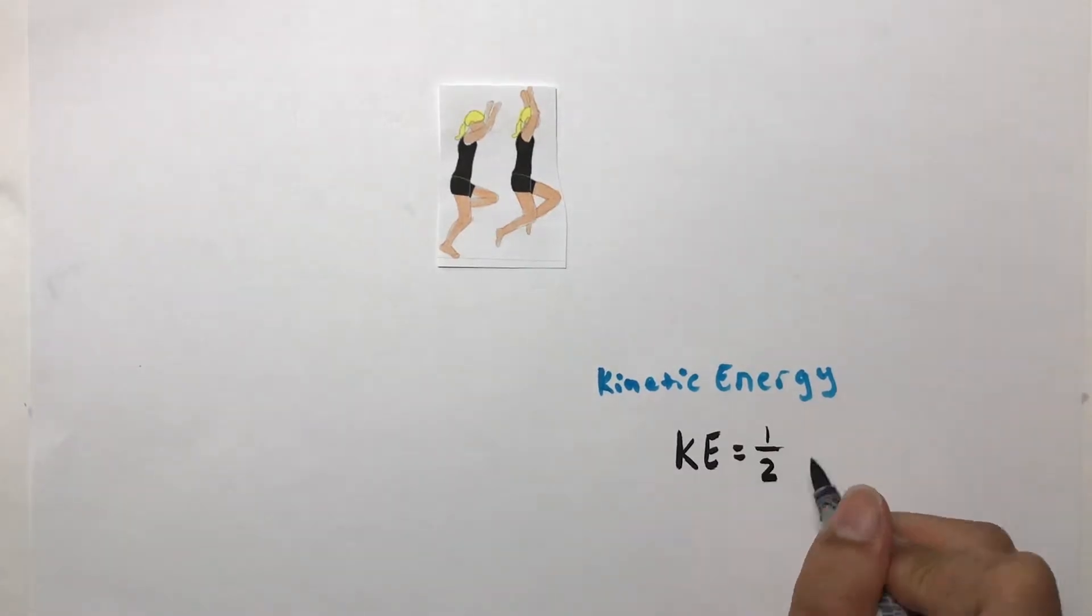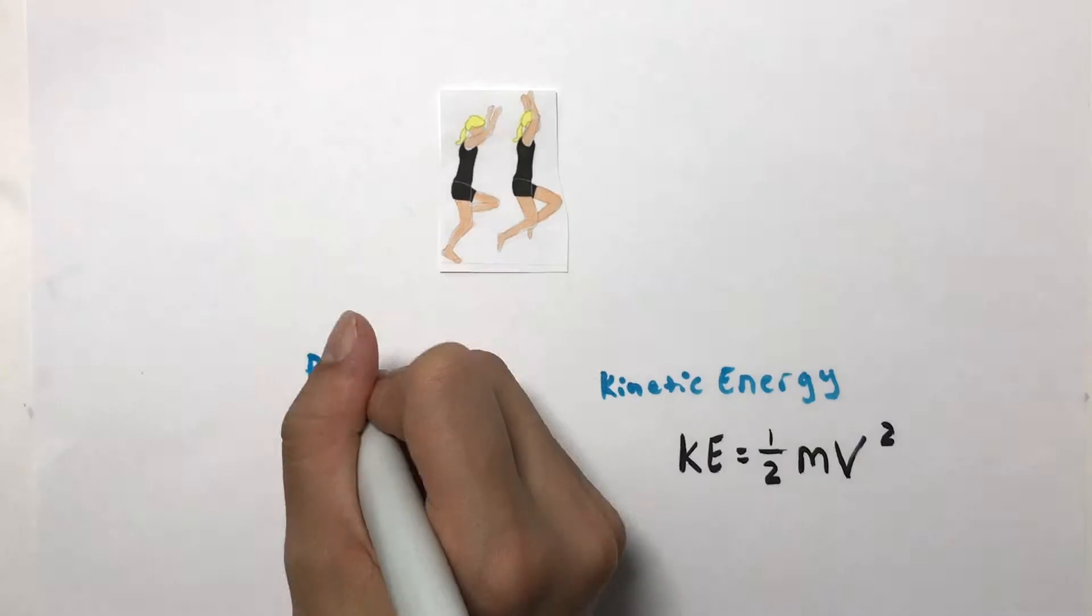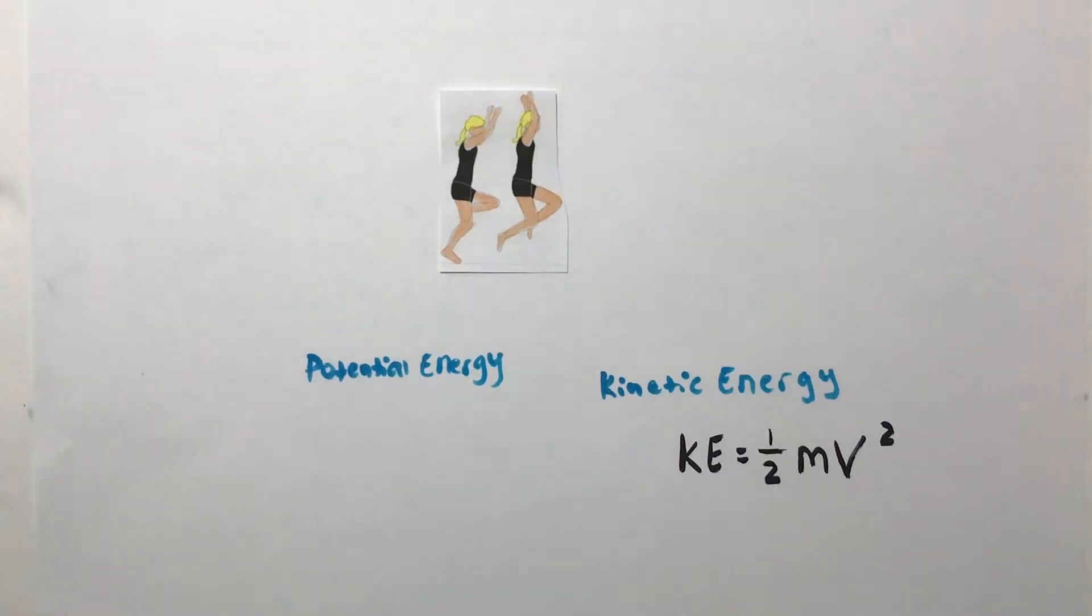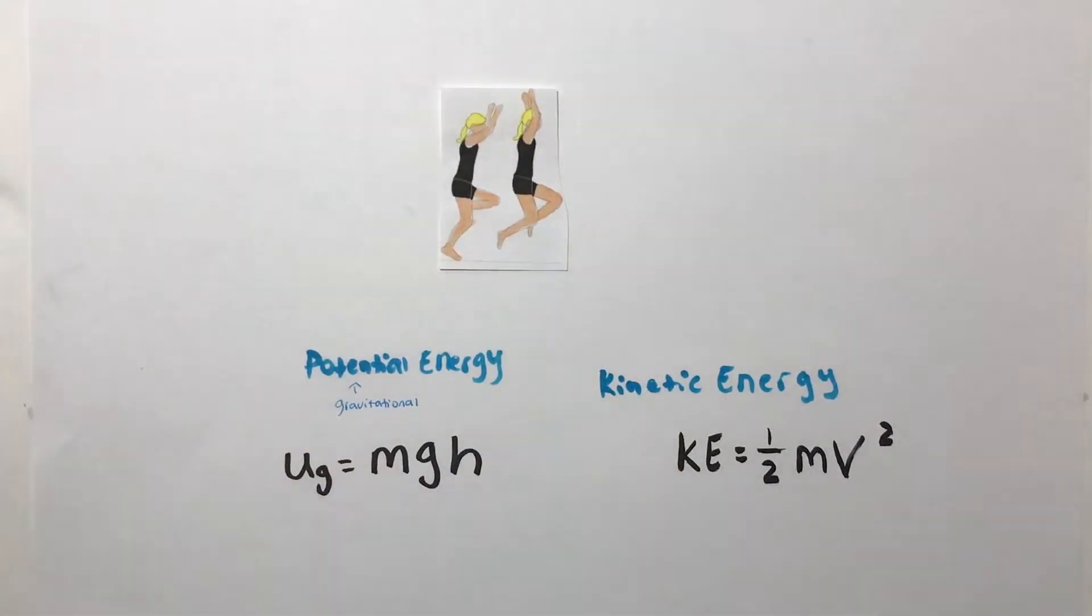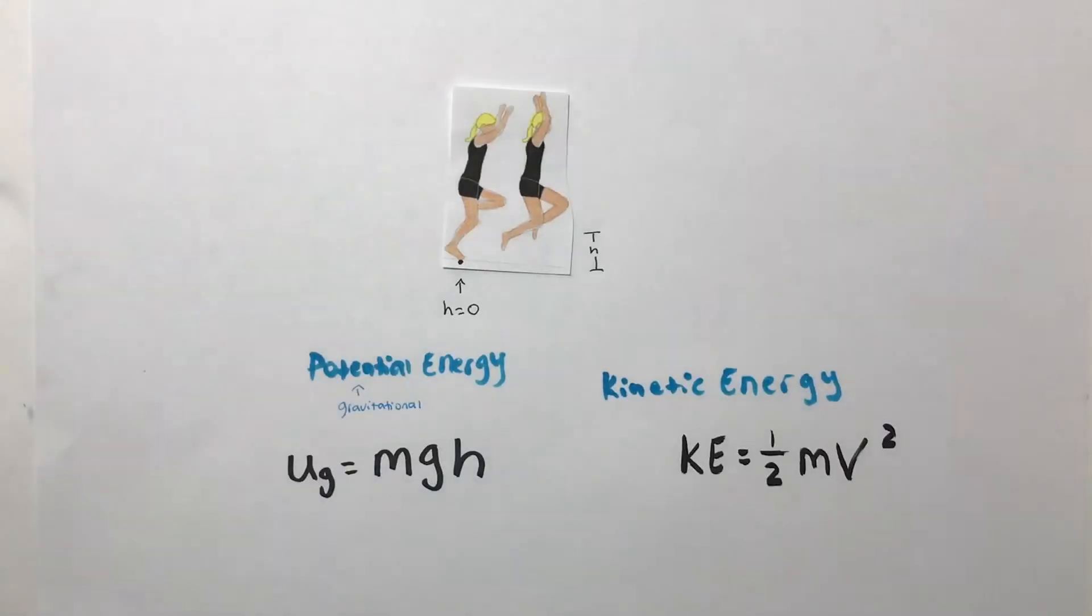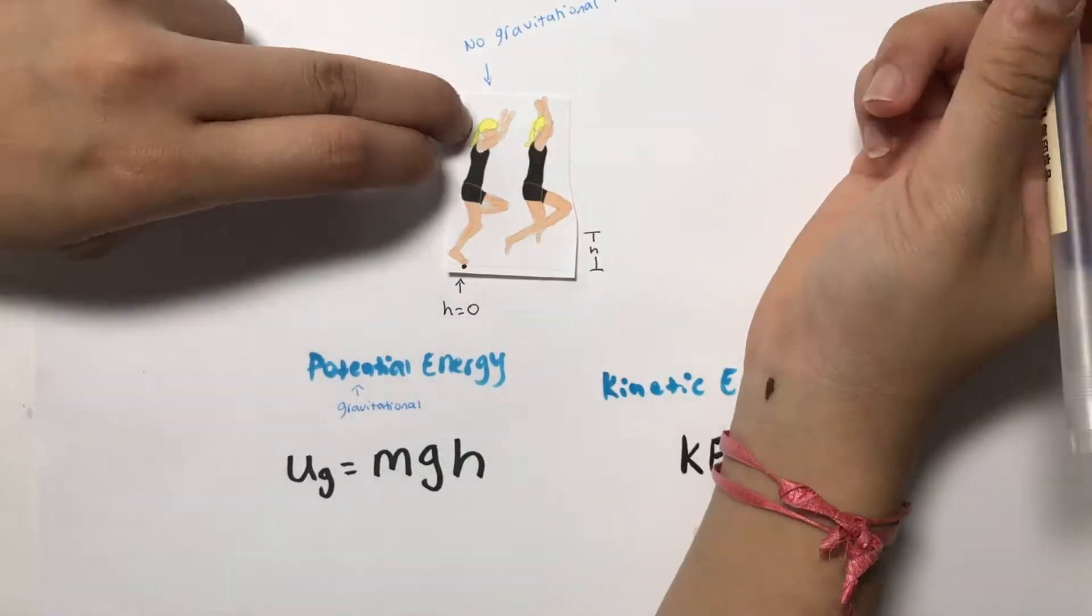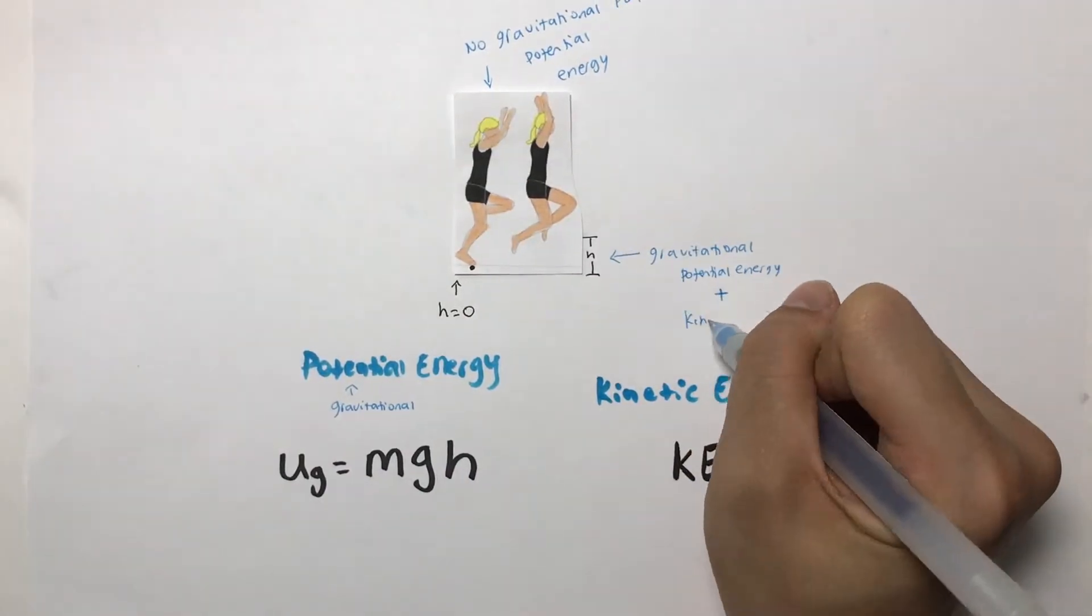If we wanted to look at this mathematically, potential energy is equal to mass times gravity times height. Kinetic energy is one-half mass times velocity squared. Velocity is speed, but in terms of direction. As soon as she jumps, we know that she has both kinetic and potential energy, because height and velocity is not equal to zero.